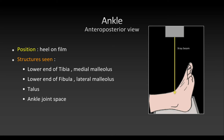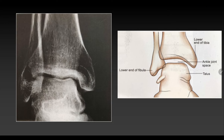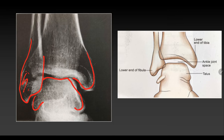For an ankle x-ray, the AP view can be taken. Usually three views are taken for the foot: AP, lateral, and oblique, but we will focus on two views today. For the AP view, the heel is placed on the film. The structures seen are the lower end of tibia, fibula, talus, and the ankle joint space. On this image you can see the lower end of tibia, the medial malleolus, the lower end of fibula forming the lateral malleolus, the talus and its margins, and the joint space.